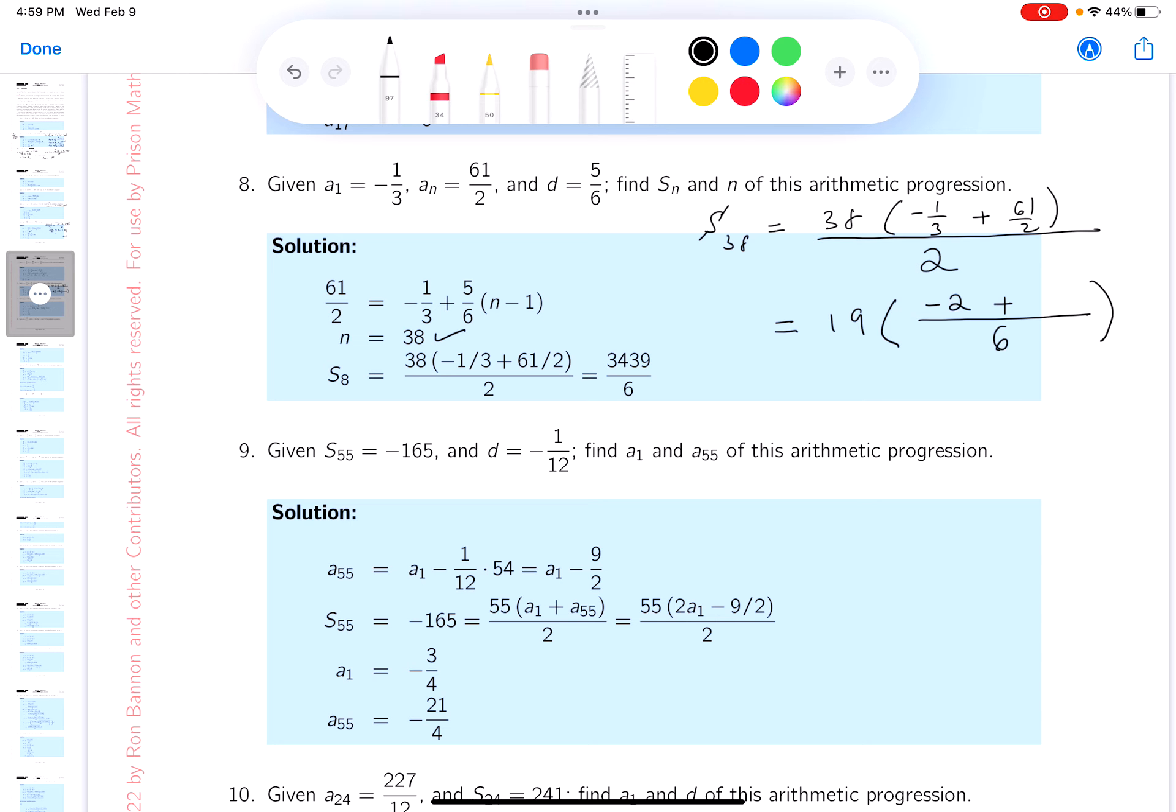183. What do you get over here? Gotta be careful. 19, that's a 6 on the bottom, and then you get 181.